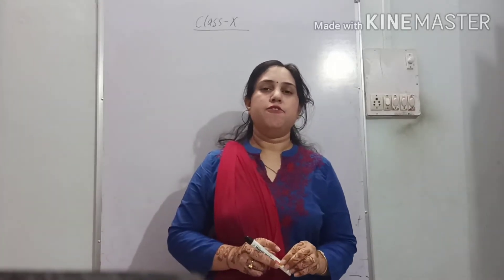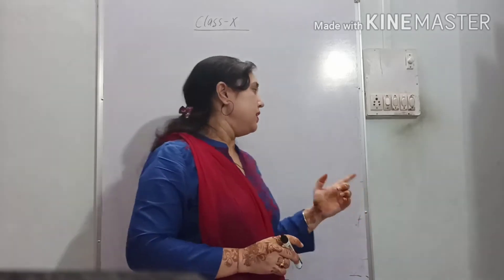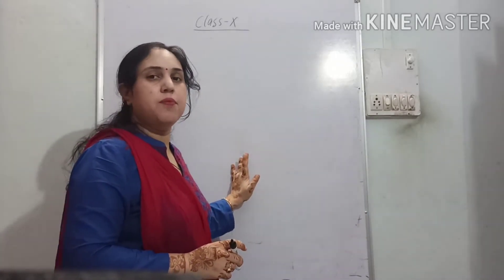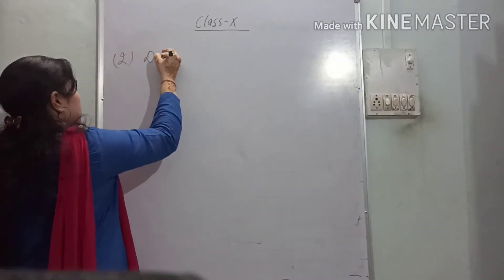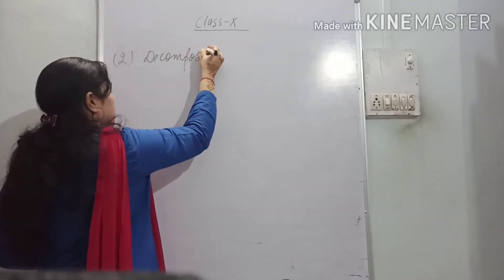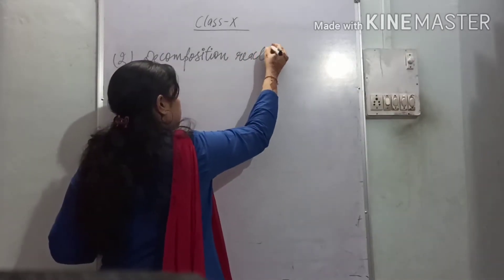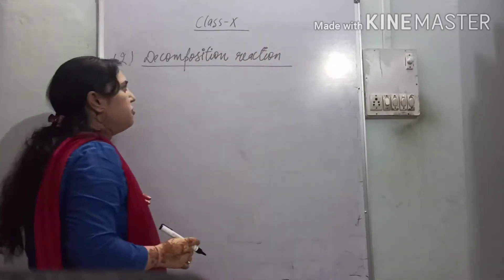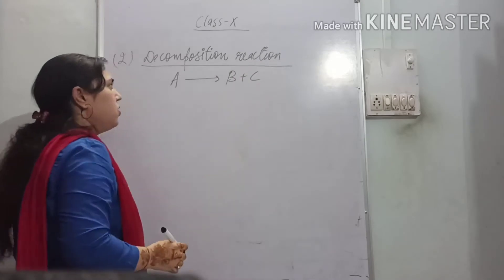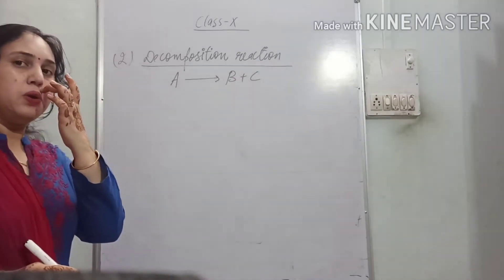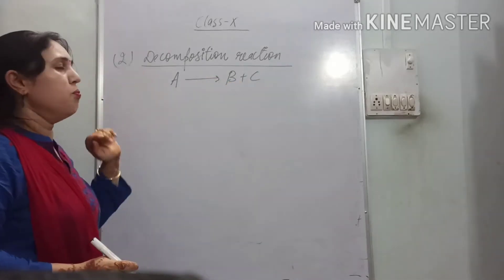Hello students. Now after discussing the first type of chemical reaction, that is combination reaction, in this video we are going to discuss the second type of chemical reaction, that is decomposition reaction. Decomposition reaction means where a single reactant breaks down into two or more than two products. So A gives B plus C, then it is known as a decomposition reaction.